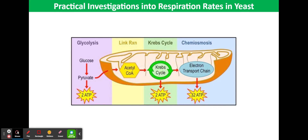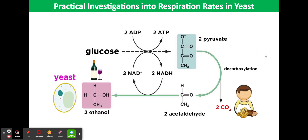If oxygen is lacking, then the yeast cells respire anaerobically using glycolysis and the ethanol pathway. This produces only a few molecules of ATP per molecule of glucose.